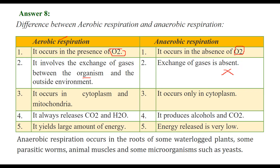Aerobic respiration occurs in the cytoplasm and mitochondria, while anaerobic respiration only occurs in the cytoplasm. Aerobic respiration always releases CO2 and water. Anaerobic respiration produces alcohols and carbon dioxide. Aerobic respiration gives a large amount of energy, whereas the energy produced in anaerobic respiration is quite low.